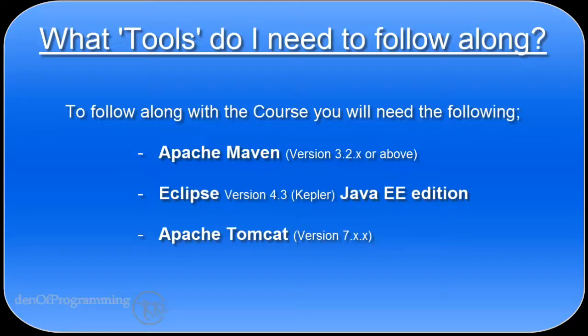In the coming tutorials I'll show you where to find Apache Maven, how to download it, and how to install it on your machine. I'll also show you how to check your current development environment to see if you're working on the Java EE edition of Eclipse, and if not, we can go to the internet and download that version. As far as the Tomcat server is concerned, I also provide a tutorial to show you where to find it, how to install it on your local machine, and how to configure it with your Java EE version of Eclipse.